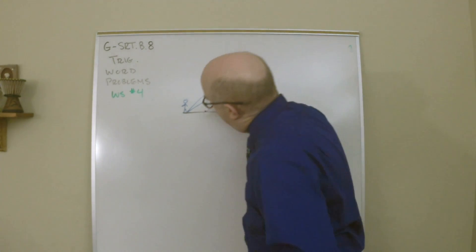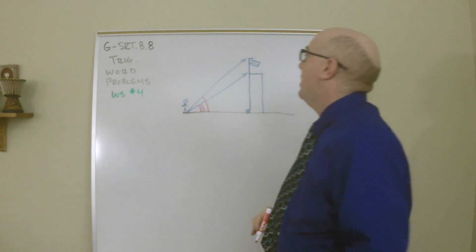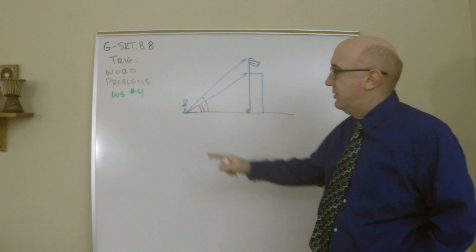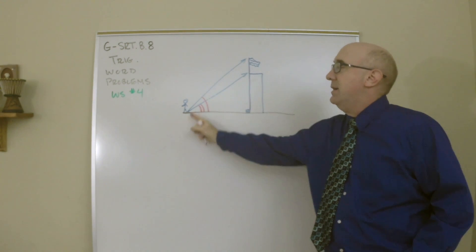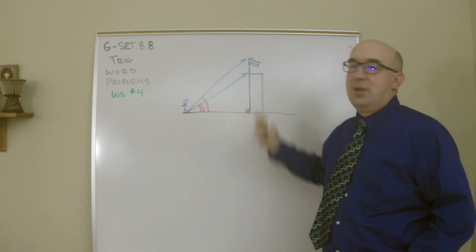This person's looking at two different angles, a smaller one and then a bigger one, but they still form just two right triangles. Can you see them? The big right triangle to the very top of the flag and a smaller right triangle to the top of the building.